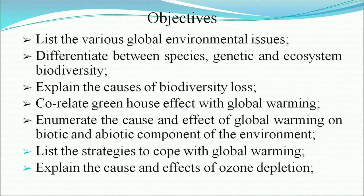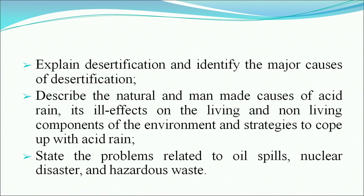After completing this lesson you will be able to: list the various global environmental issues; differentiate between species, genetic, and ecosystem diversities; explain the causes of biodiversity loss; correlate greenhouse effect with global warming; enumerate the causes and effects of global warming on biotic and abiotic components; list strategies to cope with global warming; explain the cause and effect of ozone depletion; explain desertification and identify its major causes; describe the natural and man-made causes of acid rain, its ill effects on living and non-living components, and strategies to prevent it.